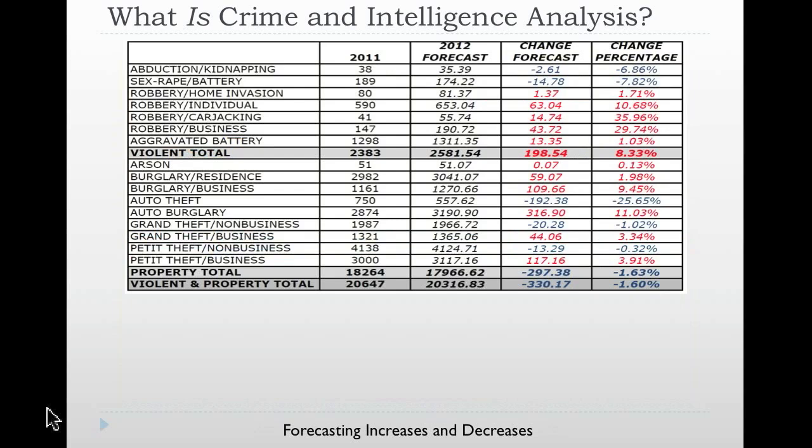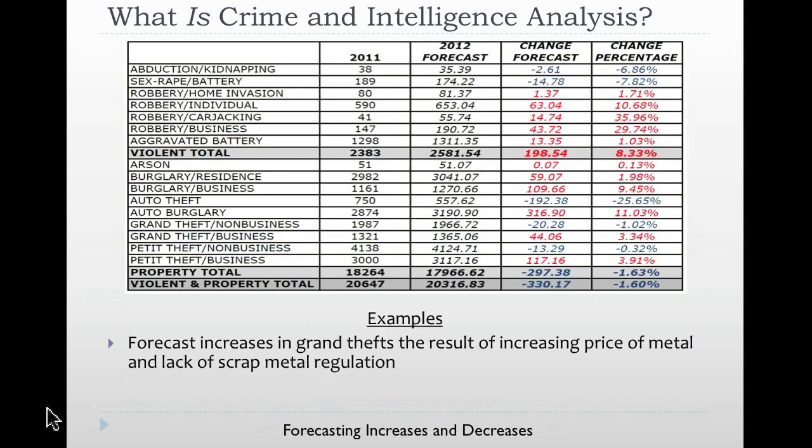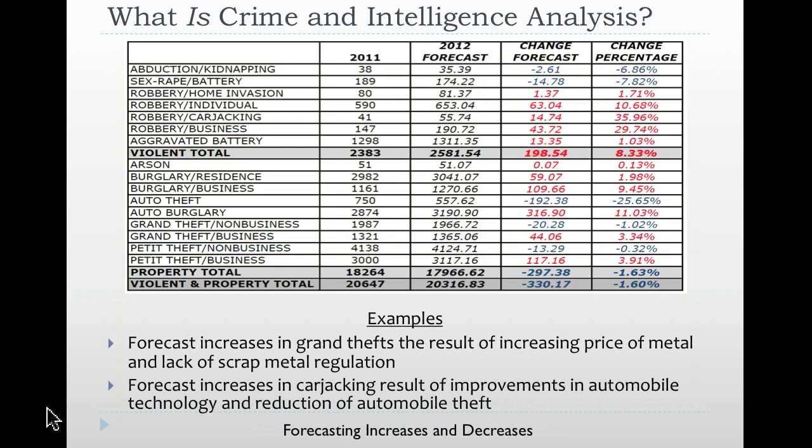Oftentimes we see increase and decrease maps and charts, but one of the things that's extremely important is whether or not these mean anything. This example is actually a forecast — a predictive algorithm done to see what we could be looking at in the future from 2011 to 2012. Examples include forecast increases in grand theft as the result of increasing the price of metal and the lack of scrap metal regulation, and forecast increases in carjacking as the result of improvements in automobile technology and the reduction of auto theft. As auto theft decreases, carjacking can increase — that's the context and understanding being provided.